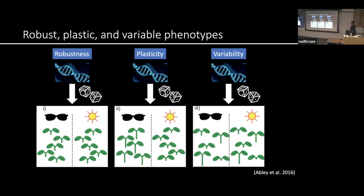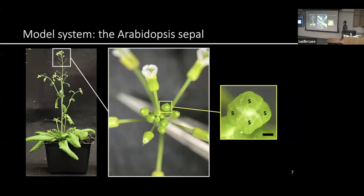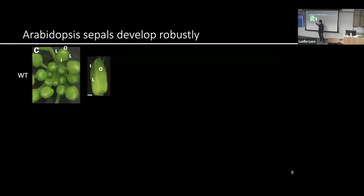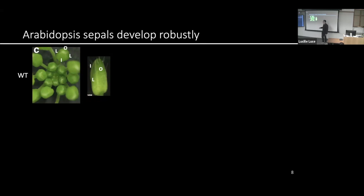In the Rotor Lab, we're very interested in the underlying mechanisms of developmental robustness, and we're studying that using Arabidopsis sepals as the model system. The Arabidopsis plant produces an inflorescence, and at the top are immature flowers covered on the outside by green structures called sepals. Arabidopsis sepals develop robustly — looking at each floral bud from the top, you always see four sepals, robustly positioned 90 degrees apart from each other and evenly distributed around the bud. This robust positioning allows us to name them as outer, inner, and the two laterals.